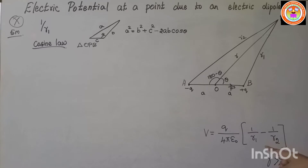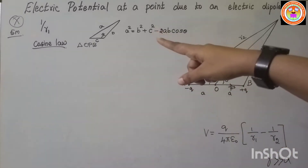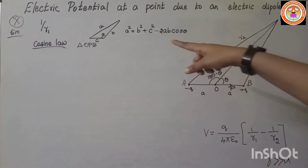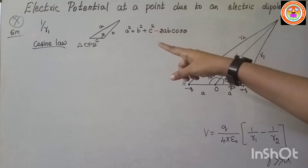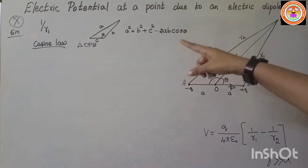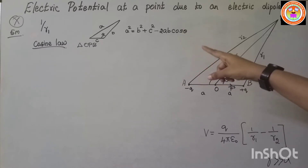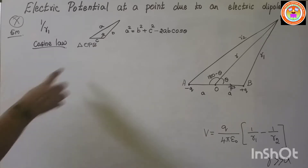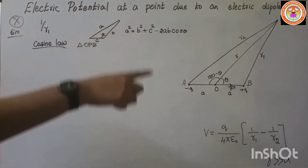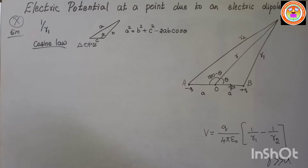To calculate 1/r1, we apply the cosine law. Consider a triangle with angle theta opposite side A: A² = B² + C² − 2BC cosθ. Applying cosine law in triangle OPB, where r1 is the side opposite to theta, we get: r1² = r² + a² − 2ar cosθ.